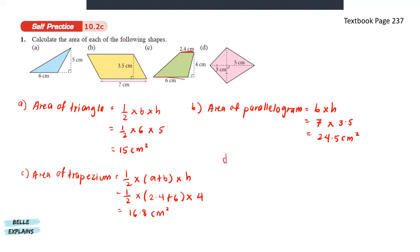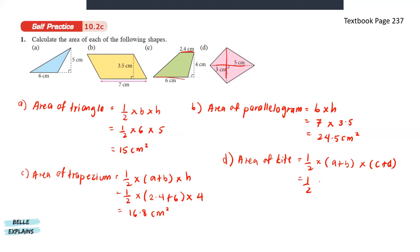And lastly for D, the area of a kite is 1 over 2 times the two diagonal lengths — so A plus B times C plus D. That gives us 1 over 2 times (3 plus 5) times (3 plus 3), which gives us 24 cm squared.